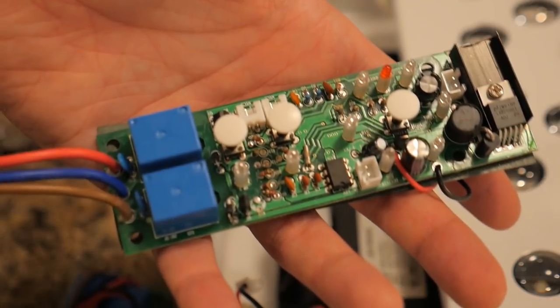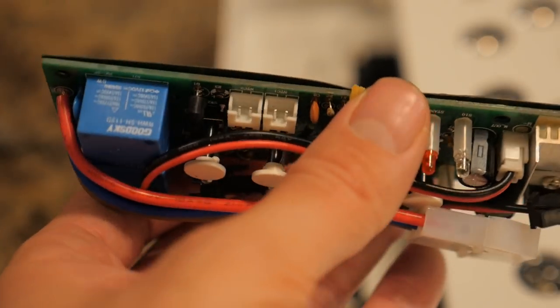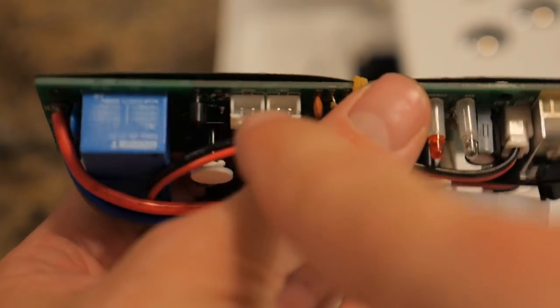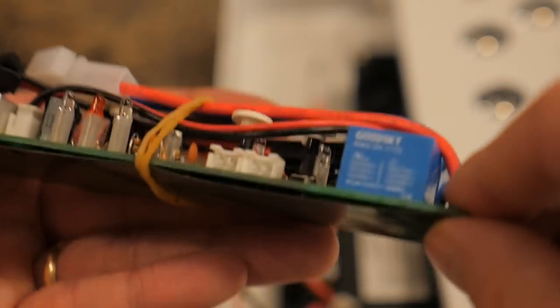Now just do the same thing in reverse. Put the new one in. So when you're putting this in make sure these two white little socket slots are sticking upwards. And this is what you're going to be plugging into.